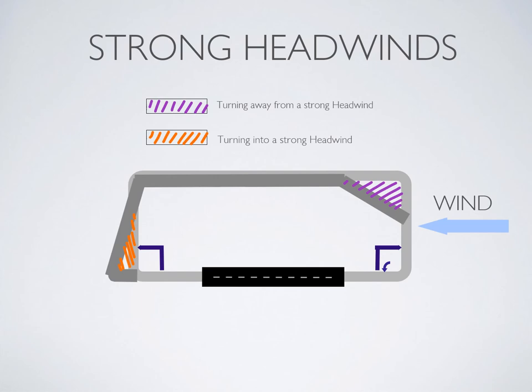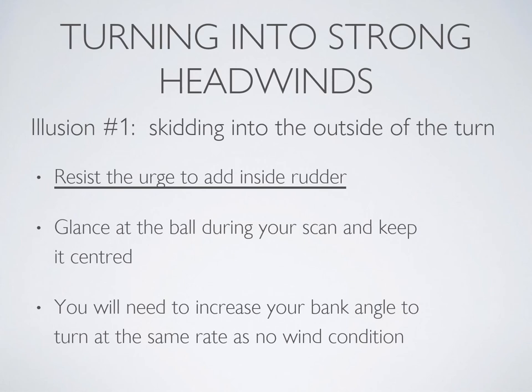Now let's take a look at what it looks like when you turn into a strong headwind. Turning into a strong headwind might give you the illusion that you're skidding towards the outside of the turn. Resist the urge to add inside rudder — glance at the ball during your scan and keep it centered. You might need to increase your bank angle to turn at the same rate as in a no-wind condition.